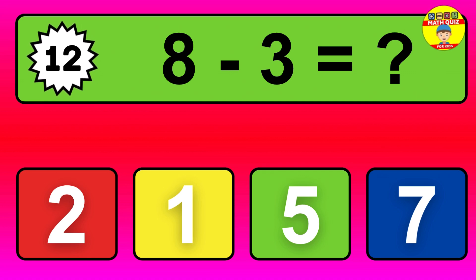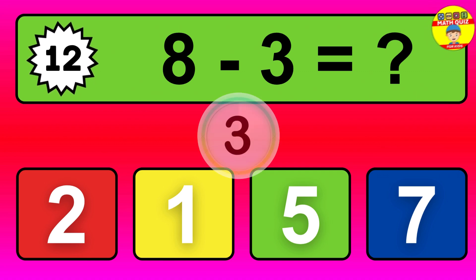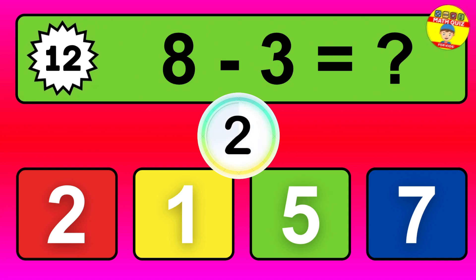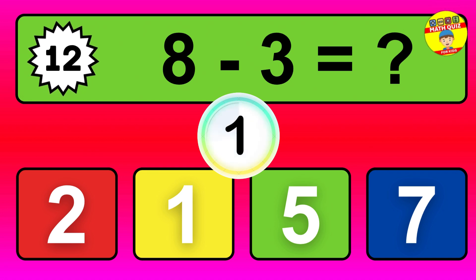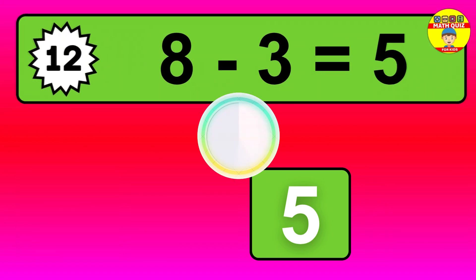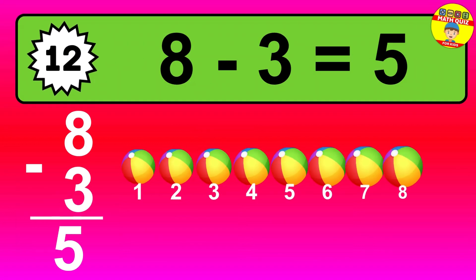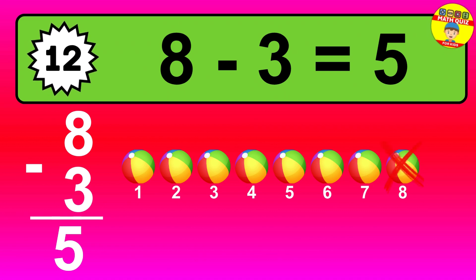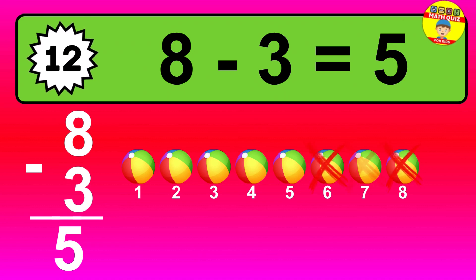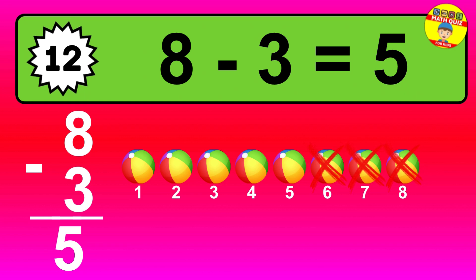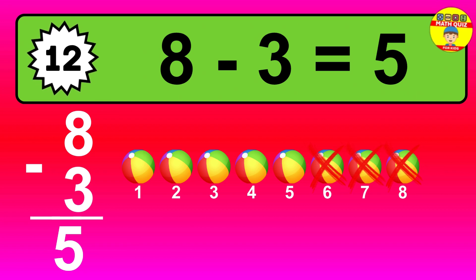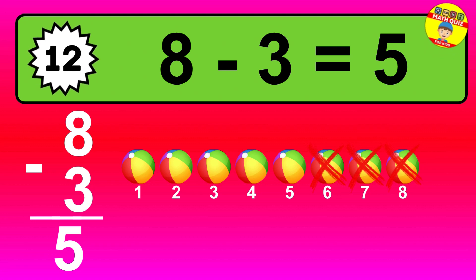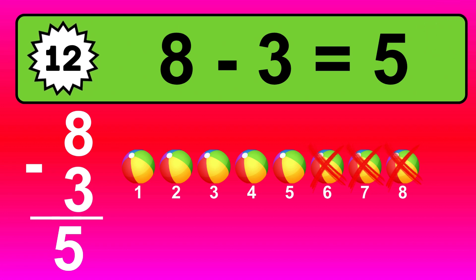Question twelve: eight minus three equals what? The answer is eight minus three is five. Let's count it. One, two, three, four, five.